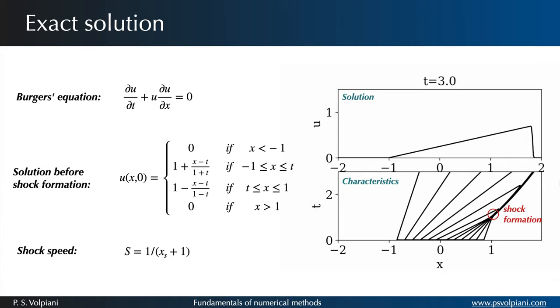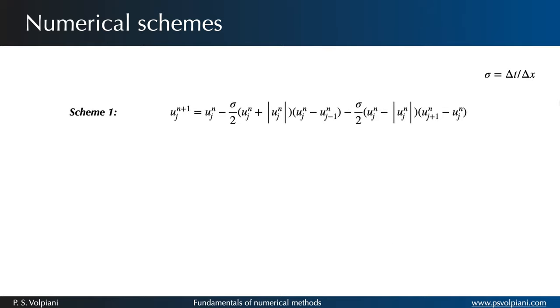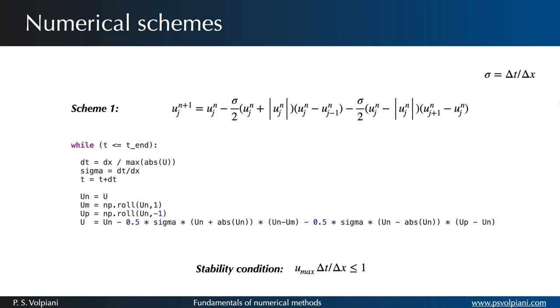In order to solve the Burgers equation numerically we're going to test two different numerical schemes. Here sigma equals delta t over delta x and this coefficient is related to the stability condition of the scheme. In fact as we discussed in the first video we know that the CFL condition must be respected to achieve stability.